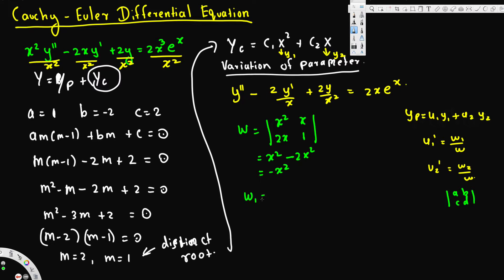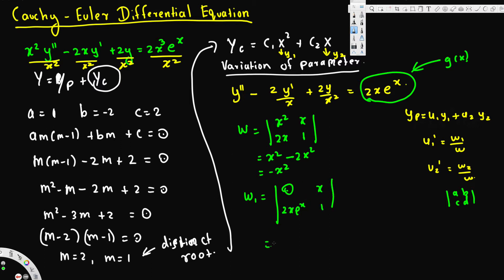To find W₁, we replace the first column with [0, g(x)]. The zero goes in the top-left and g(x) = 2xe^x goes in the bottom-left, while the second column stays as [x, 1]. The determinant is 0·1 − 2xe^x·x = −2x²e^x. So W₁ = −2x²e^x.